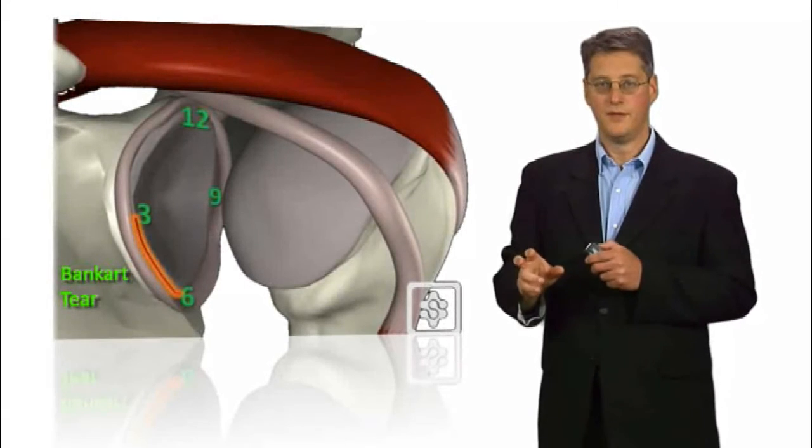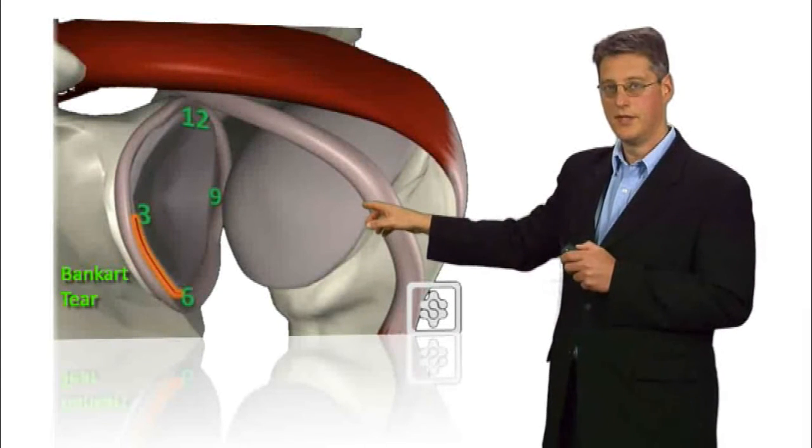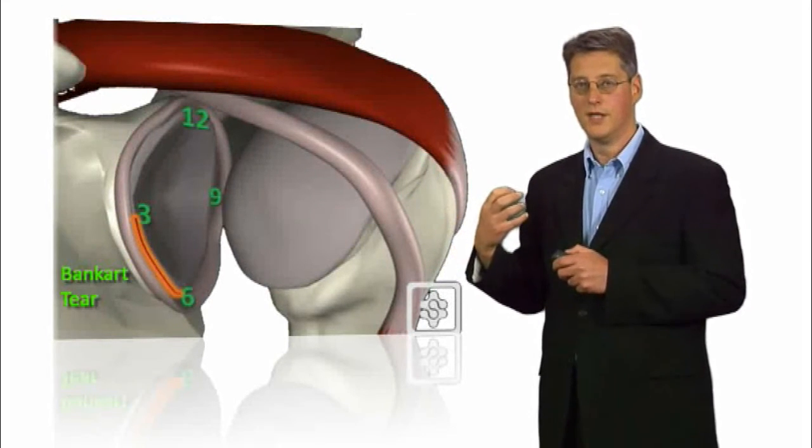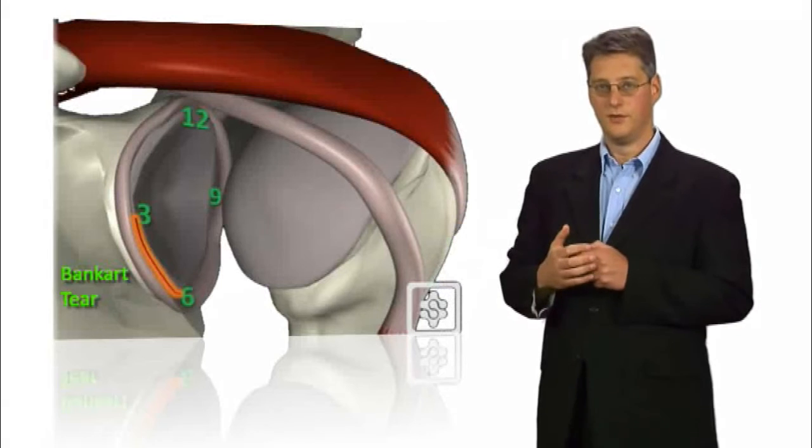So a tear that occurs from 3 to 6 o'clock is known as a Bankart tear and this is associated with dislocations that come out of the front of the shoulder.